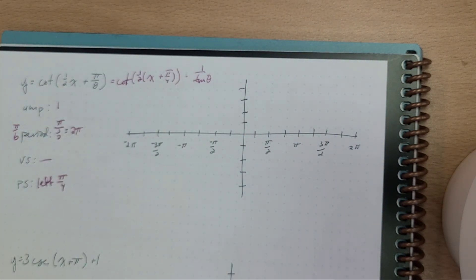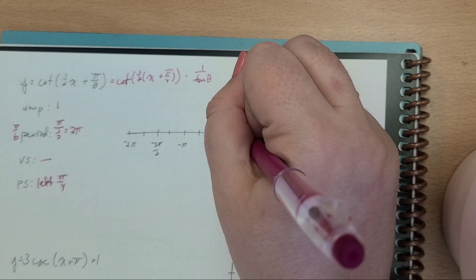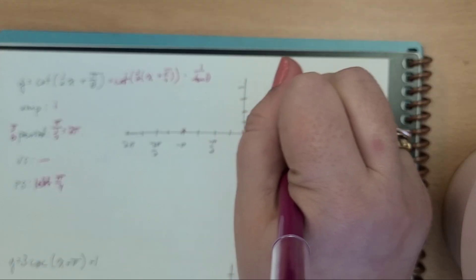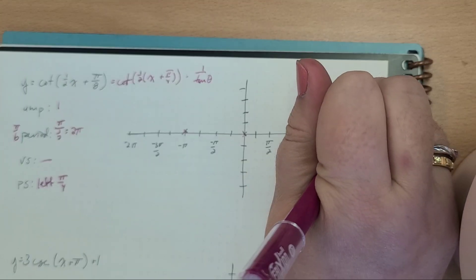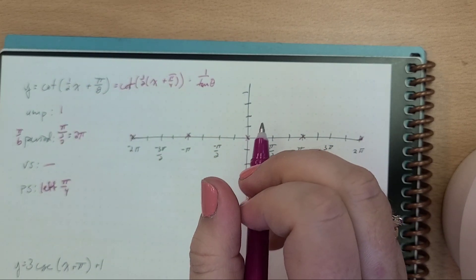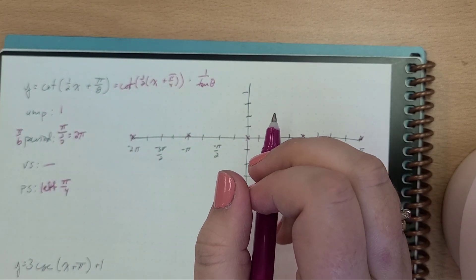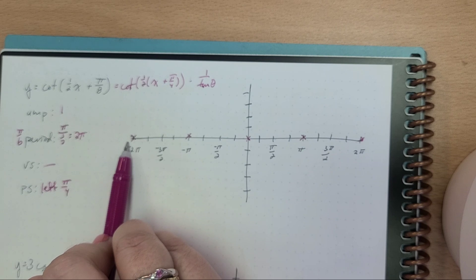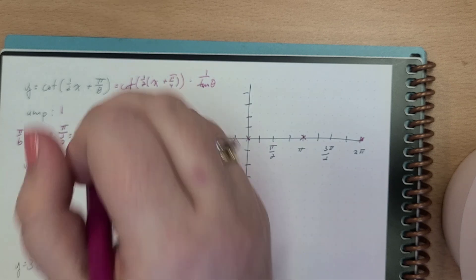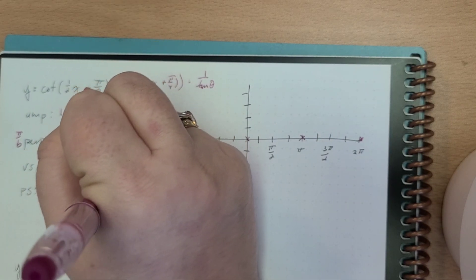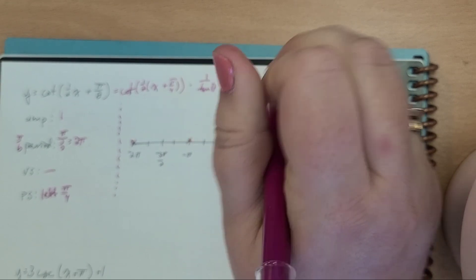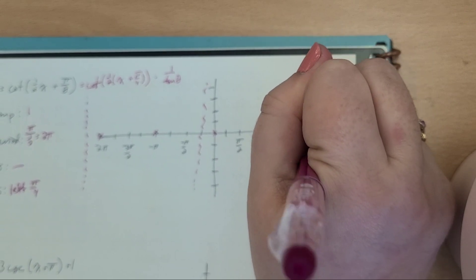For cotangent, thinking of this as 1 over tangent of θ — so when is tangent of θ equal to 0? Tangent of θ is 0 at 0, at π, at negative π, at 2π, at negative 2π. And we have to go left π/4, but since this is a period of 2π, we're really going to shift this out way more. So we would have a vertical asymptote here, a vertical asymptote here, and a vertical asymptote here.